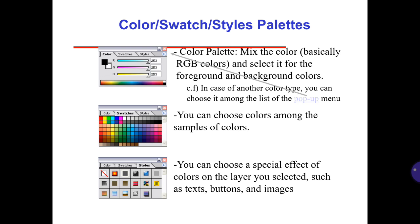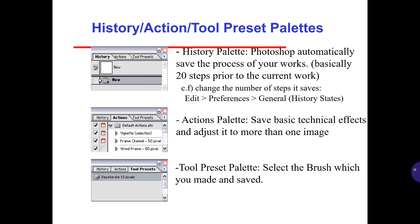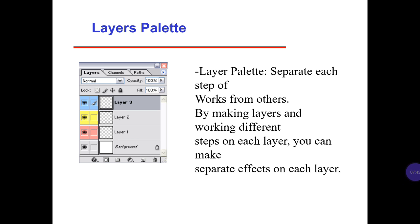History, Action, and Tool Present palette. Photoshop automatically saves the process of your work — basically 20 steps prior to the current work. To change the number of steps it saves, go to Edit, Preferences, then General, and adjust the History States. The Actions palette saves basic technical effects and lets you apply them to more than one image. The Tool Preset palette allows you to select a brush you have made and save it. The Layers palette separates each step of work from others by creating layers and working on different steps on each layer.